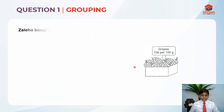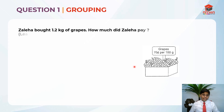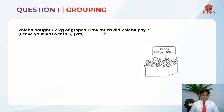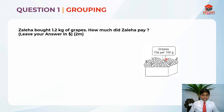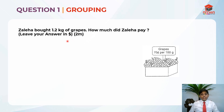Question 1. Let's read the question first. Zaliha bought 1.2 kilograms of grapes. How much did Zaliha pay? They have given us information which states that 70 cents per 100 grams of grapes — that means 100 grams of grapes cost 70 cents. They have asked us to leave our answer in dollars, and this question is awarding us two marks.